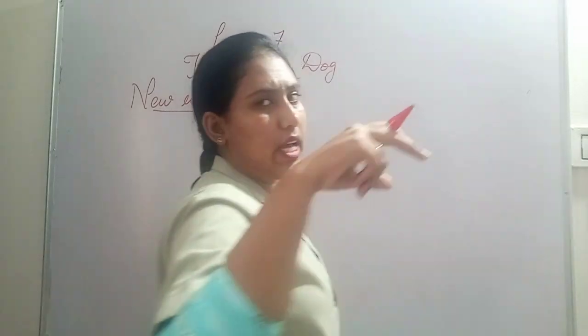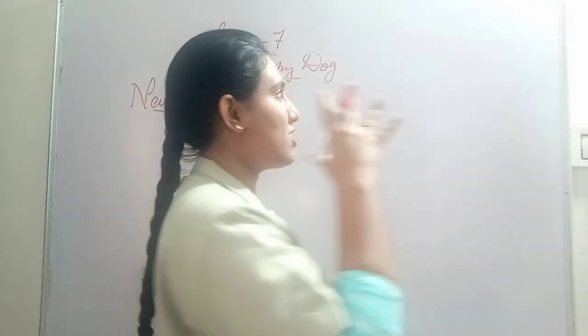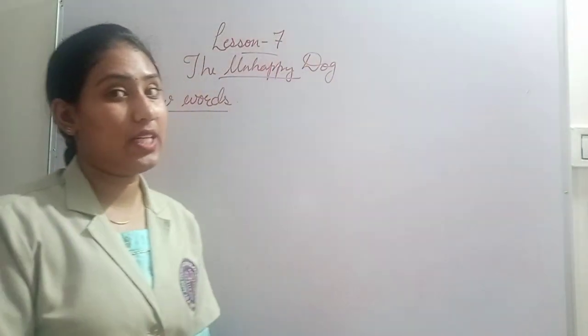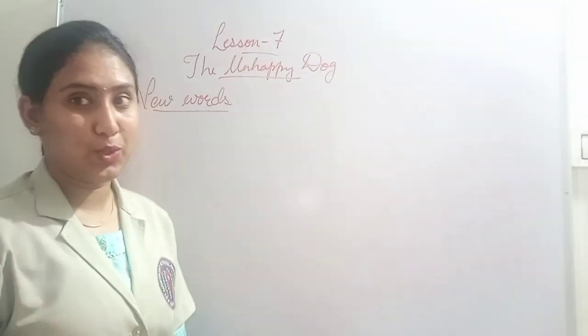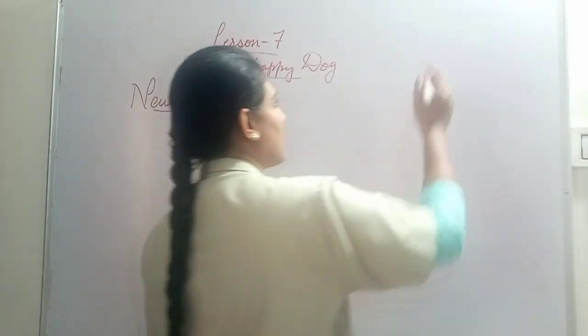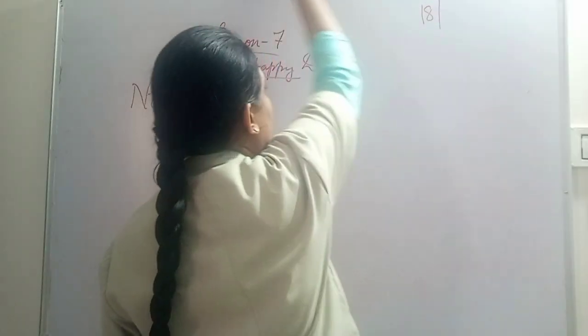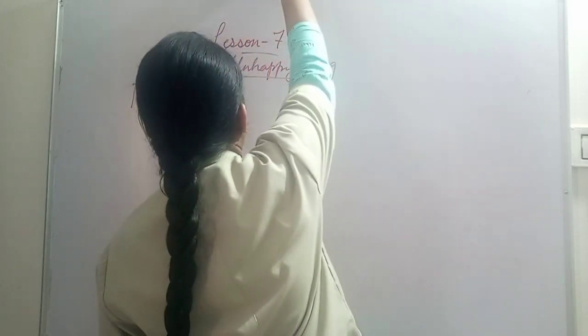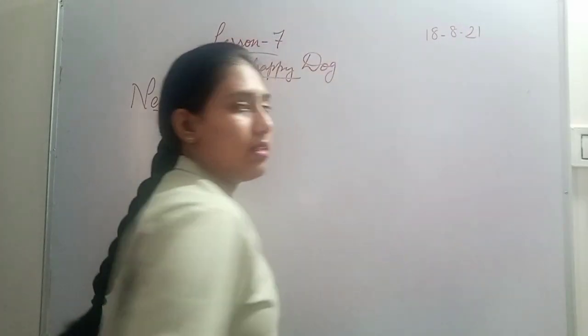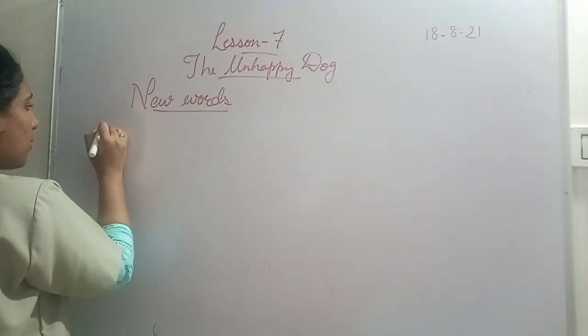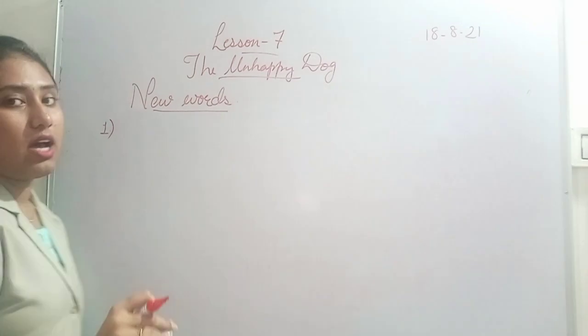So what is the date today? Can anyone tell me? No one is knowing. Every day the teacher has to tell you the date and the time and what lesson we are studying, what page number we are going to do. So today's date is 18-8-21. Number one, like this we will write number one, two, three and then we'll write down the name.